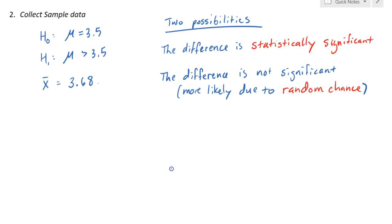What we're really trying to figure out is whether the difference between 3.68 and 3.5 is statistically significant or likely due to random chance. If we decide 3.68 represents a statistically significant difference from 3.5, we should change our mind about the mean being 3.5 and assume it's actually more. If the difference is not significant and more likely due to random chance, we should stick with the notion that the mean is most likely 3.5.